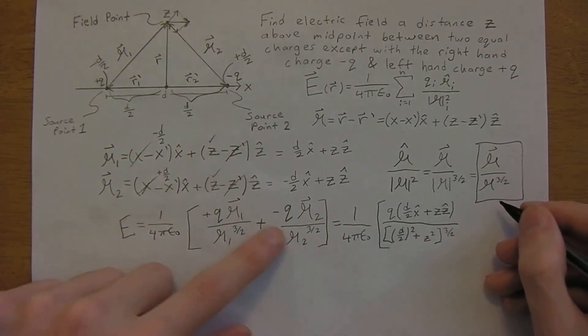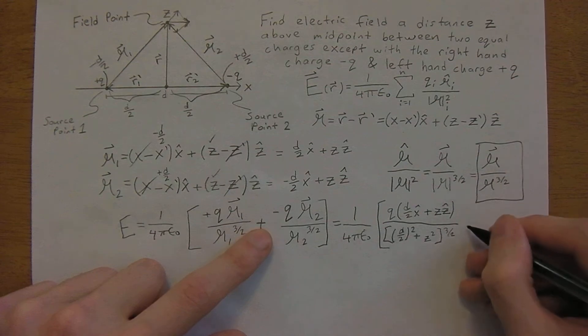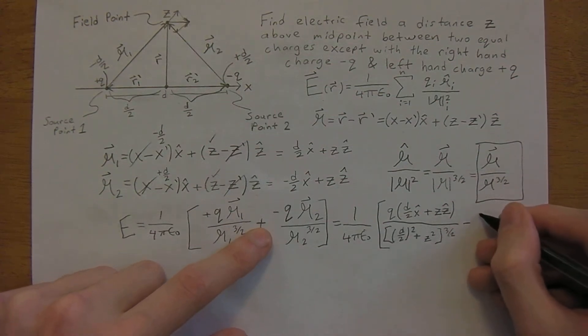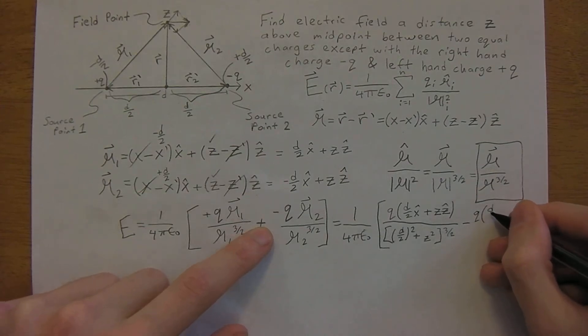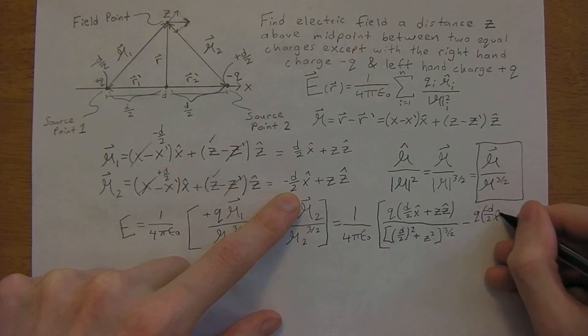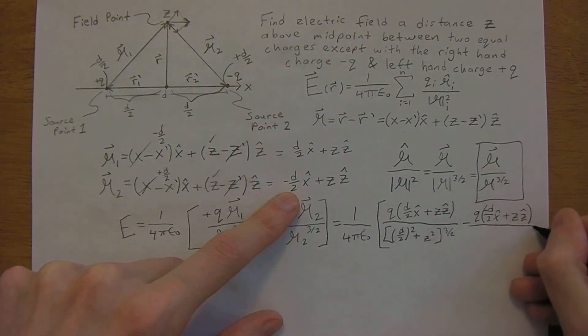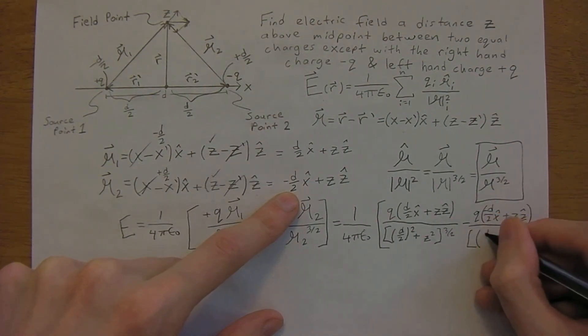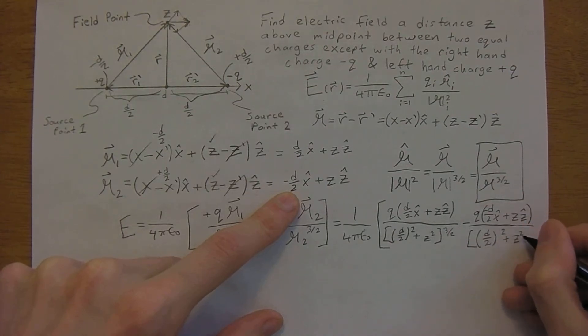And now, here we had the addition, but now we're going to have a subtraction. And this will actually distribute through, so now we have negative d over 2 x hat plus z z hat divided by the same common denominator d over 2 squared plus z squared to the 3 halves power.